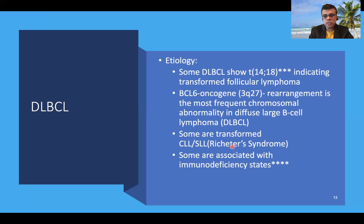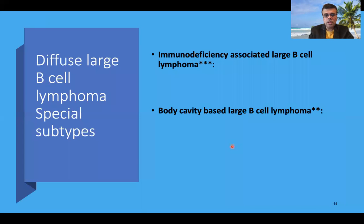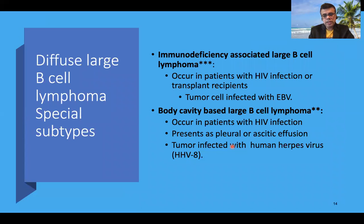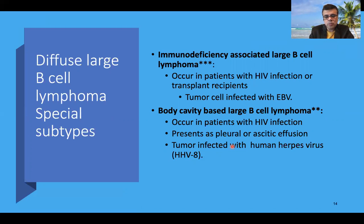Many DLBCL cases are associated with immunodeficiency states. Special types include immunodeficiency-associated large B cell lymphoma, occurring in patients with HIV infection or transplant recipients, where tumor cells are characteristically infected with EBV. Body cavity-based large B cell lymphoma can also develop in patients with HIV infection, with tumor cells often infiltrating the pleural sac or peritoneum, presenting as pleural or ascitic effusion. HHV8 genome positivity is often isolated from these lymphomas.